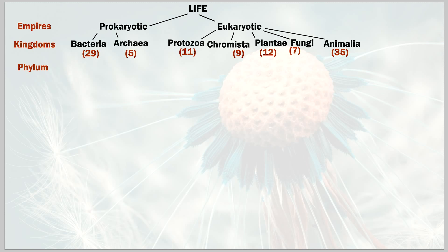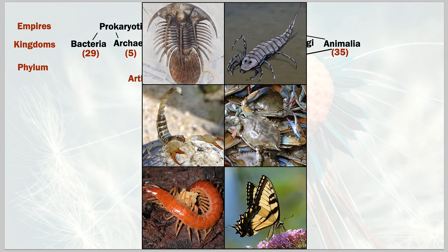Focusing now on animals, we start with the phylum arthropoda — arthropods. Arthropods have an exoskeleton; they're invertebrates. Examples include crabs, some extinct species, centipedes, butterflies — the creepy crawlies as people like to call them.